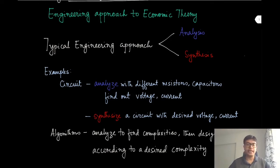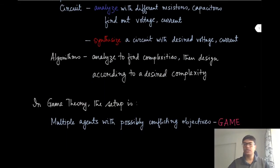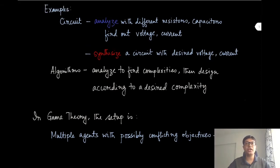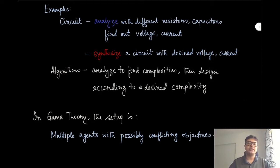Similarly, in algorithms courses, in design of algorithms you are given a specific algorithm and try to analyze it, finding different metrics — for instance, complexity is one such metric. In the design part, you are trying to design an algorithm which will achieve a certain desired complexity.